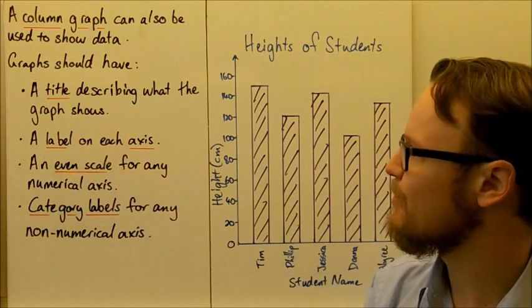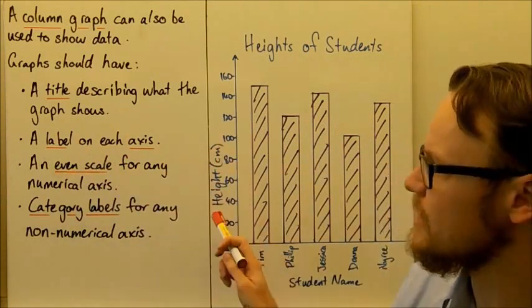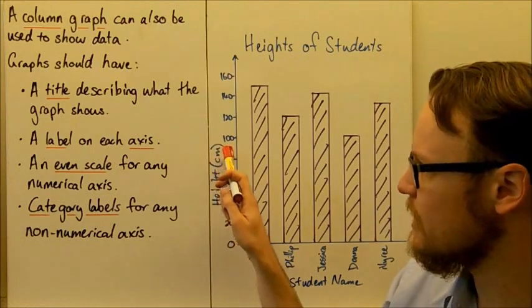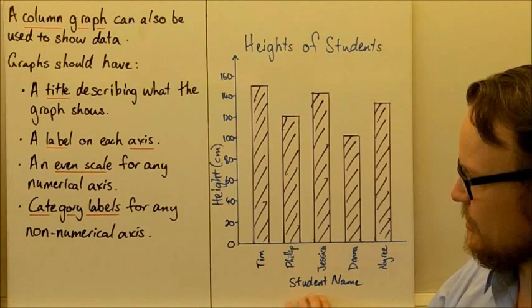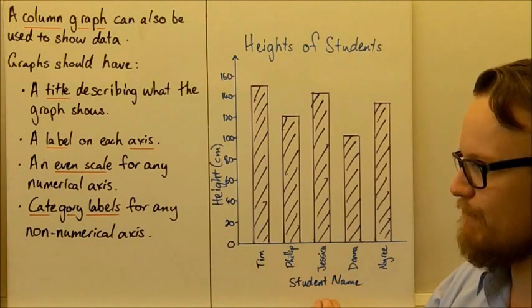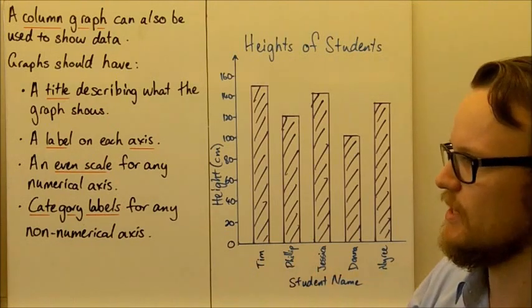It needs to have a label on each axis. The label for this axis here is height in centimeters. We've got the units there that we're measuring height in. And we've got here that the axis on this label here is student name. So this is showing student names.